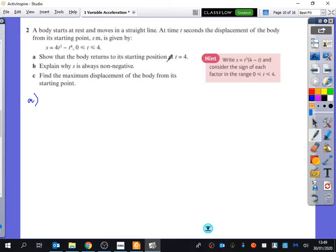Part A was nice and easy. We want to show it returns to its starting point at t equals 4. Well, when t equals 4, s equals 4 times 4 cubed minus 4 to the power of 4, which very obviously without even using a calculator is 0. Easy for that first bit.